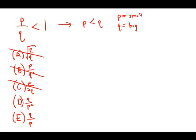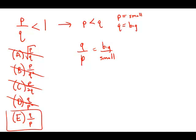Now in D and E, what we do is we take Q over P. That's big over small — that's actually the reciprocal. Big over small would be something larger than 1. At least E would be. In D, you make the denominator bigger, so it's questionable whether D would be larger than 1. But it's 100% certain that E would be larger than 1. So the answer is E.